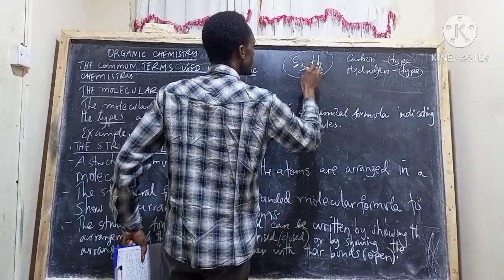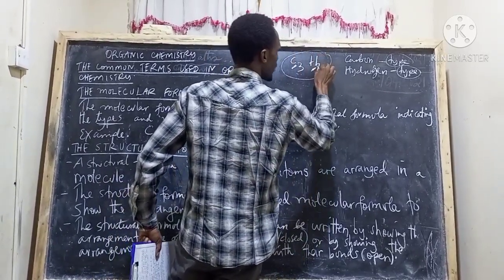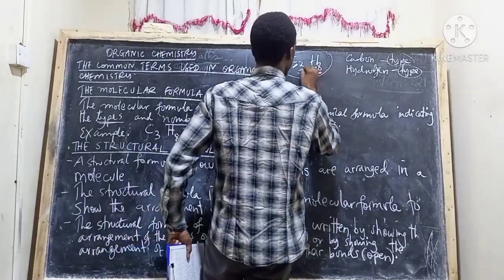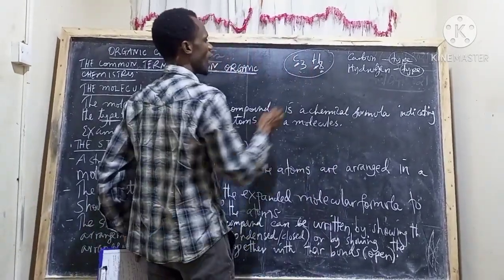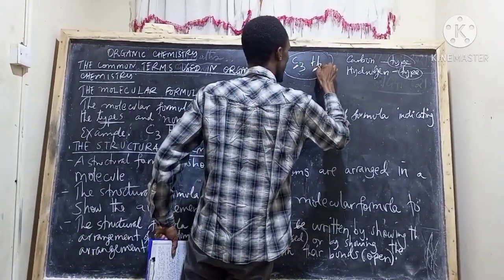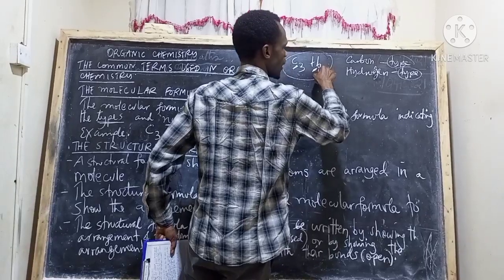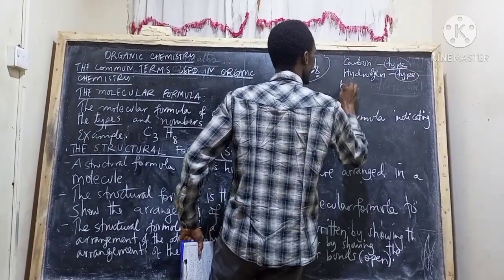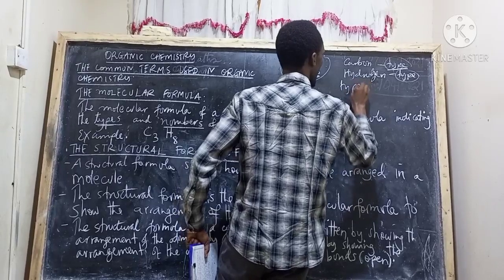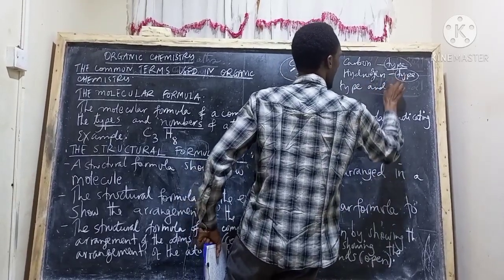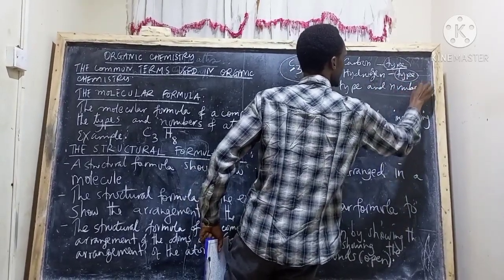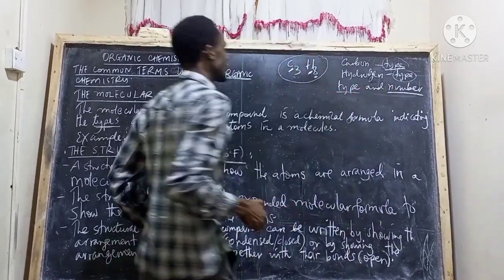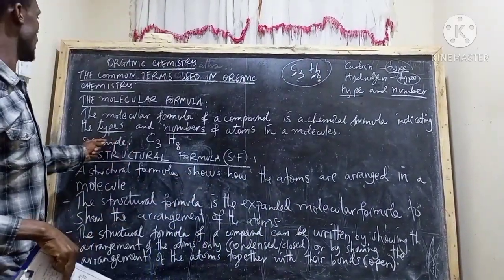To recap: C3H8 is made up of carbon and hydrogen. How many carbons? We have three of them. How many hydrogens? We have eight of them. So we are talking about the type and the number — and that is what the molecular formula tells us.